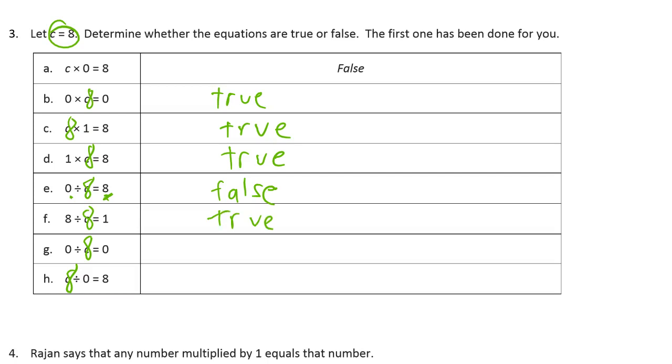And 0 divided by 8 equals 0. Yep, we've got a quotient of 0. So a quotient and a dividend are both 0. That can be true.